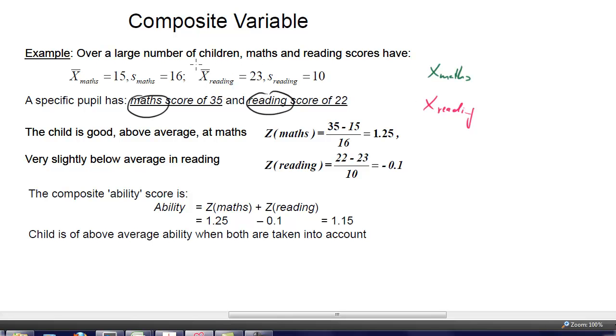For reading the average score is 23, and the standard deviation is 10. Whereas for maths the average score is 15 and the standard deviation is 16. We are interested in a specific pupil. That particular student has a maths score of 35 and a reading score of 22.